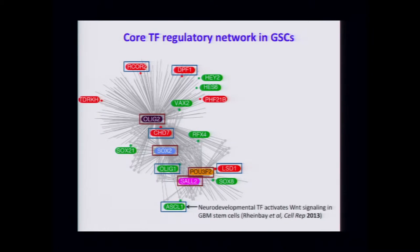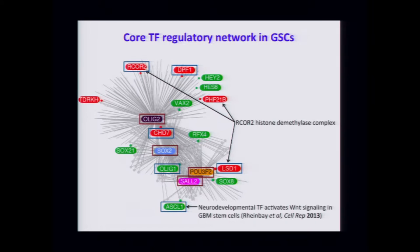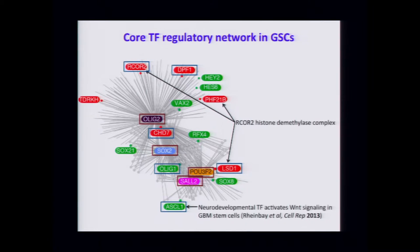By knowing the core TFs driving the circuitry and examining their direct downstream targets, you have a set of regulators that are essential for the tumor-propagating state. We were particularly interested in ASKL1 — a neurodevelopmental TF that activates Wnt signaling in GBMs — as well as the RcoreII histone dimethylase complex, where three or four different members are direct targets of the core circuitry. This parallels how knowing the core circuitry of iPS cells told us a lot about pluripotent regulatory circuitry.